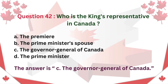Question 42: Who is the King's Representative in Canada? A. The Prime Minister. B. The Prime Minister's Spouse. C. The Governor General of Canada. D. The Prime Minister. The answer is C: The Governor General of Canada.